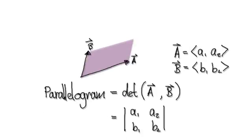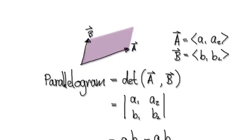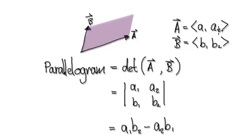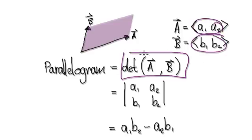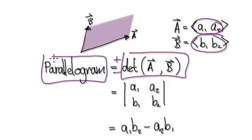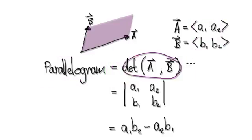Something important that I forgot to mention in the previous video: if you are trying to work out the determinant of two vectors, the value of the determinant could be positive or it could be negative. So if you want to know the area of the parallelogram, you will need to take the absolute value of the determinant, because the determinant could be positive or negative.